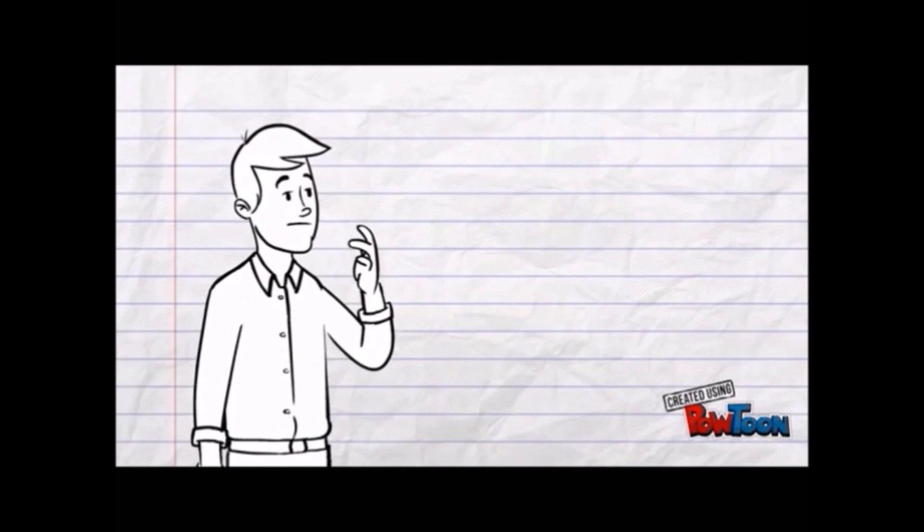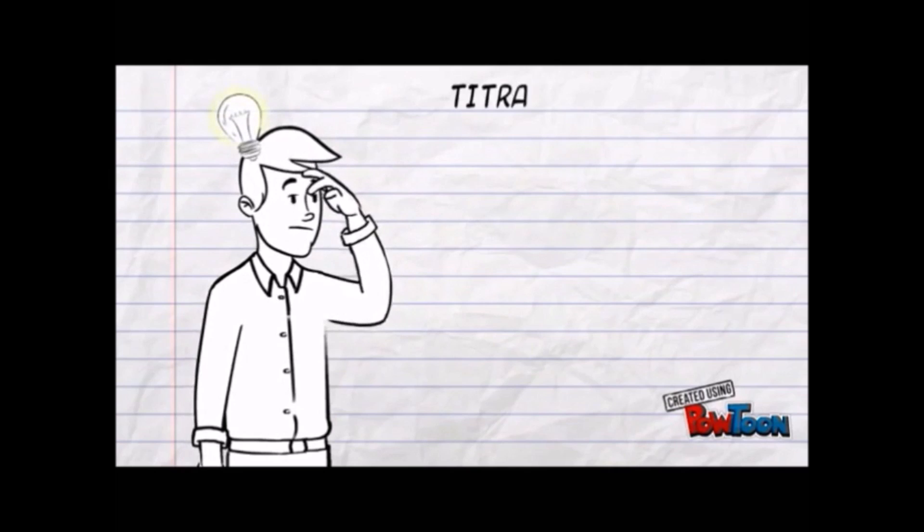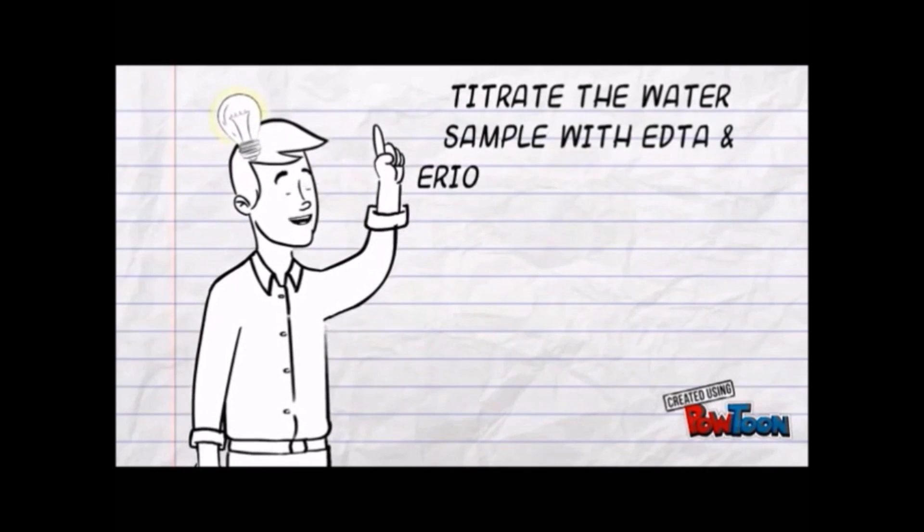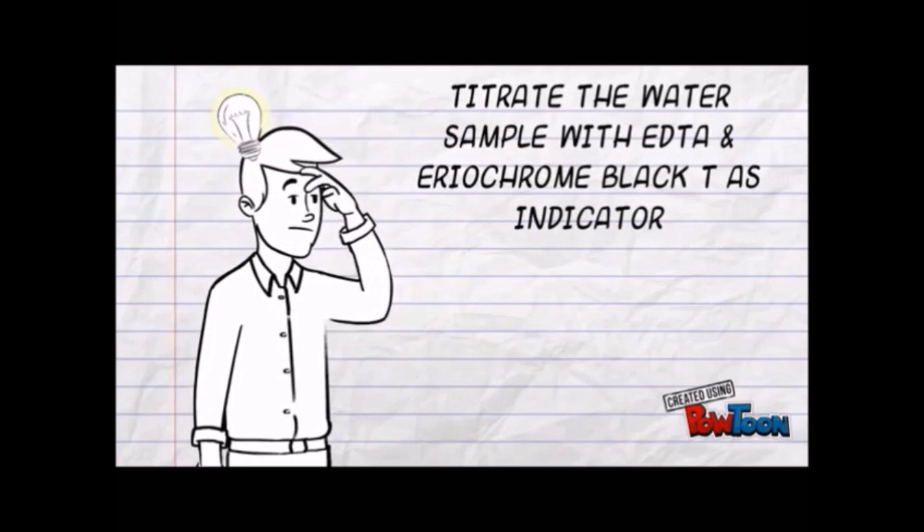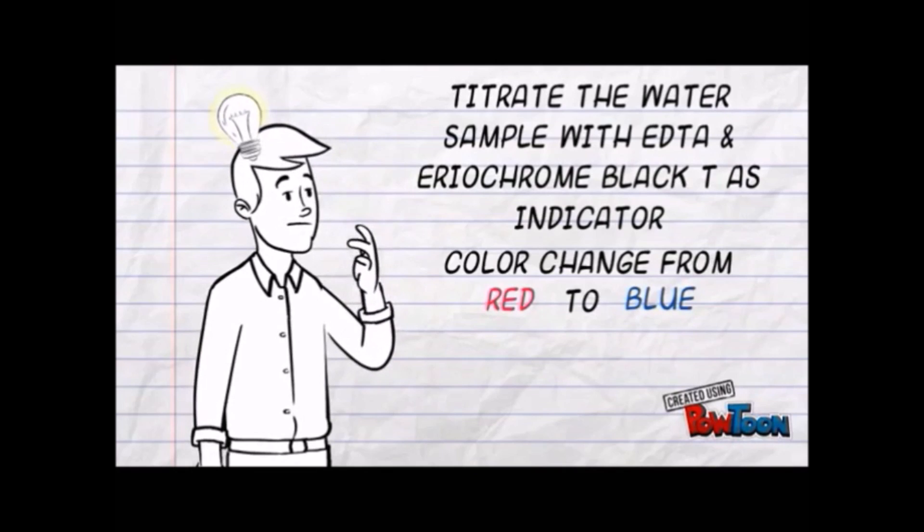Thus, the water hardness is determined by titrating the water sample with EDTA as the titrant and Eriochrome Black T as the indicator which changes from red to blue in the presence of excess EDTA.